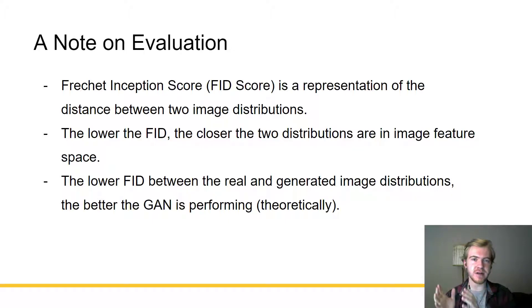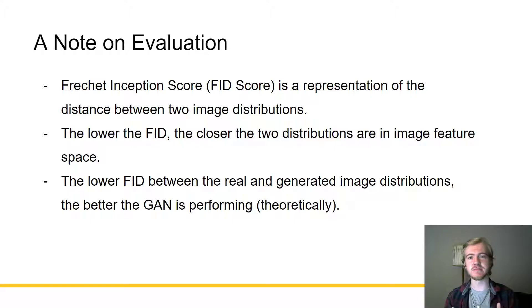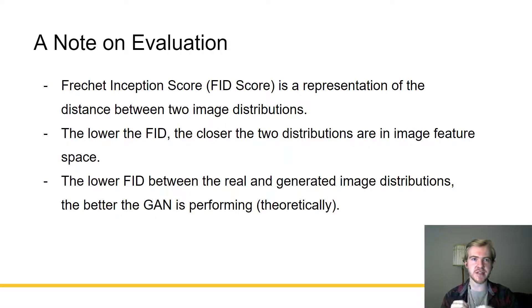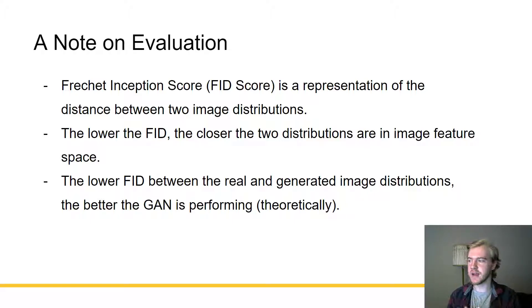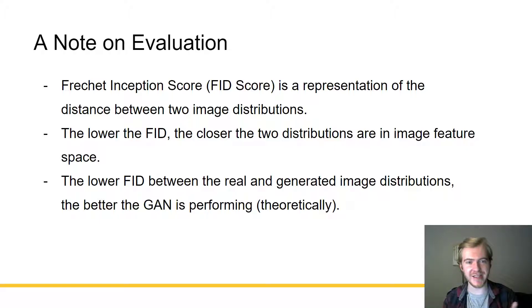I'd like to talk about the evaluation of these networks. We're using what's called the Fréchet Inception Distance, or FID score, which is a representation of the distance between two image distributions. It takes an image classifier, gets image features from them, then gets the mean and standard deviation of those features, and finds the difference between those means and standard deviations between the two distributions. Essentially, the lower the FID score, the closer the two distributions are in image feature space — and the lower the FID between the real and generated image distributions, the better the GAN is performing.